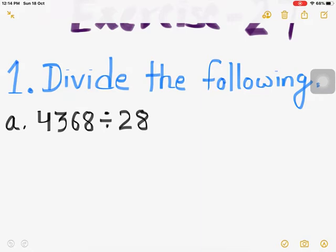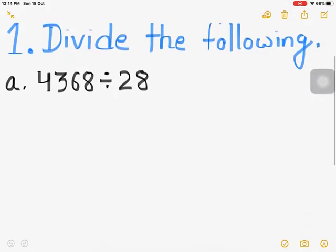Now let us start to divide. Here in question number A: 4368 divided by 28. You can understand it in this way — there are four thousand three hundred sixty-eight footballs, and if the balls are distributed to 28 students equally, then how many balls will each student get? We need to find out how many balls each student will get.